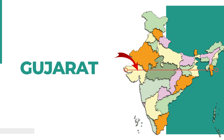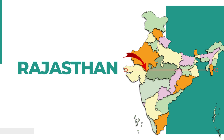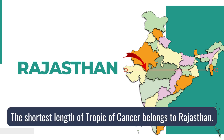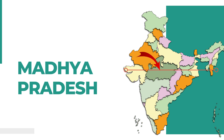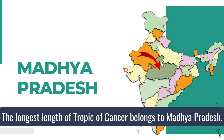Let's learn them one by one. First, Gujarat. Second, Rajasthan — the shortest length of the Tropic of Cancer belongs to Rajasthan, remember this. Next is Madhya Pradesh — the longest length of the Tropic of Cancer belongs to Madhya Pradesh. This is also an important fact to remember.